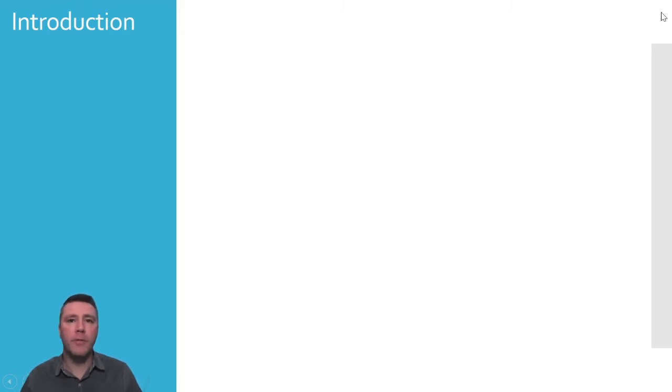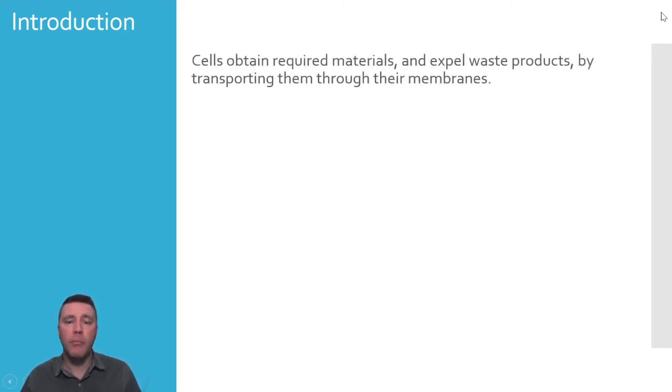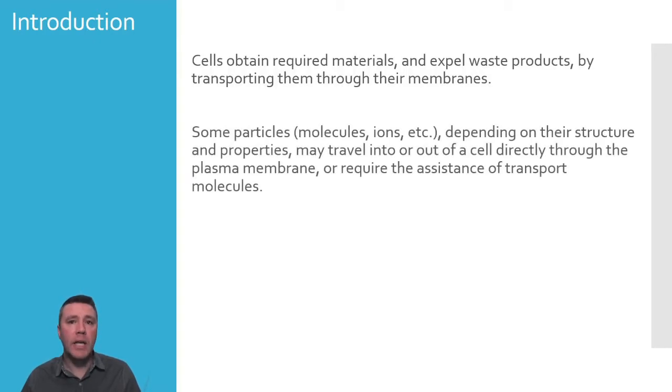As was explored in a previous video, we know that cell membranes are the surfaces through which cells obtain required materials and expel waste products. Because of the construction of the cell membrane, it can regulate the passage of substances based on those substances' chemical properties and structure.